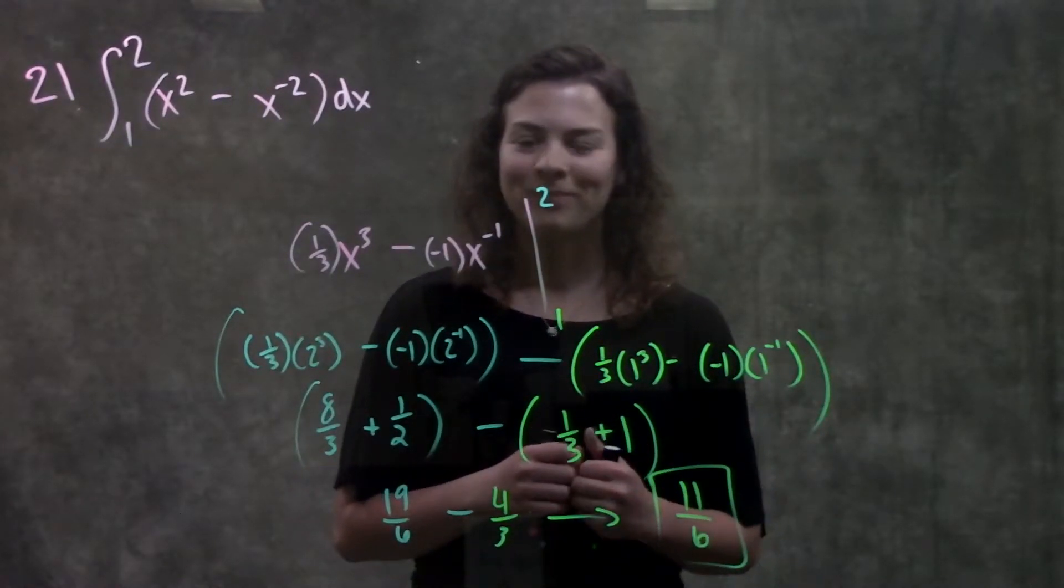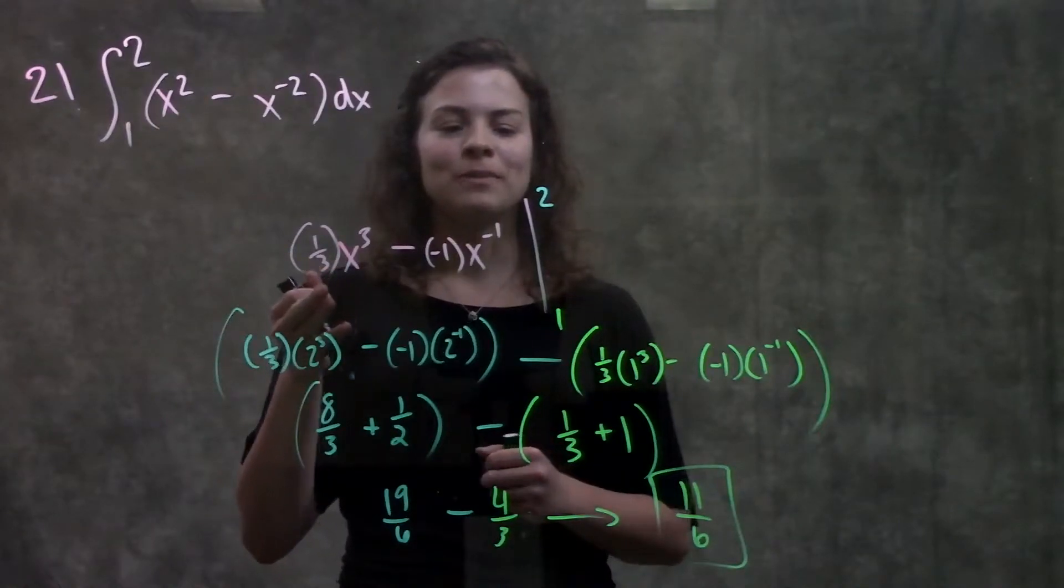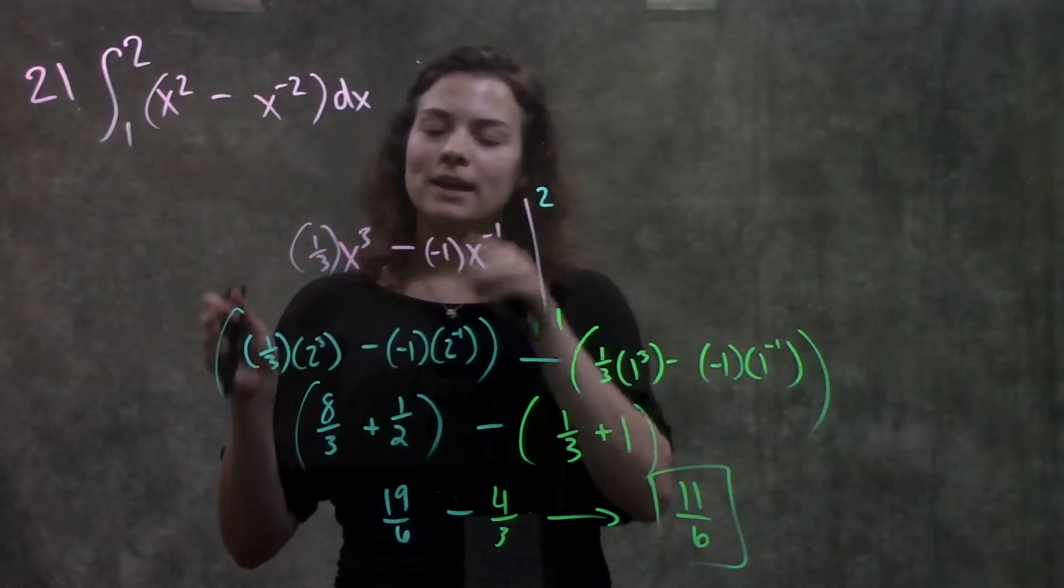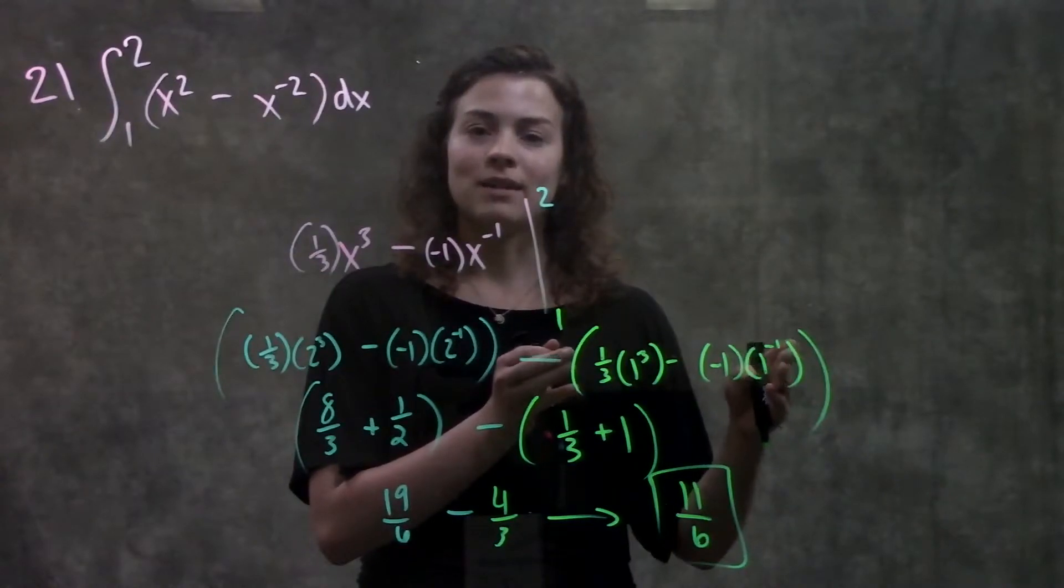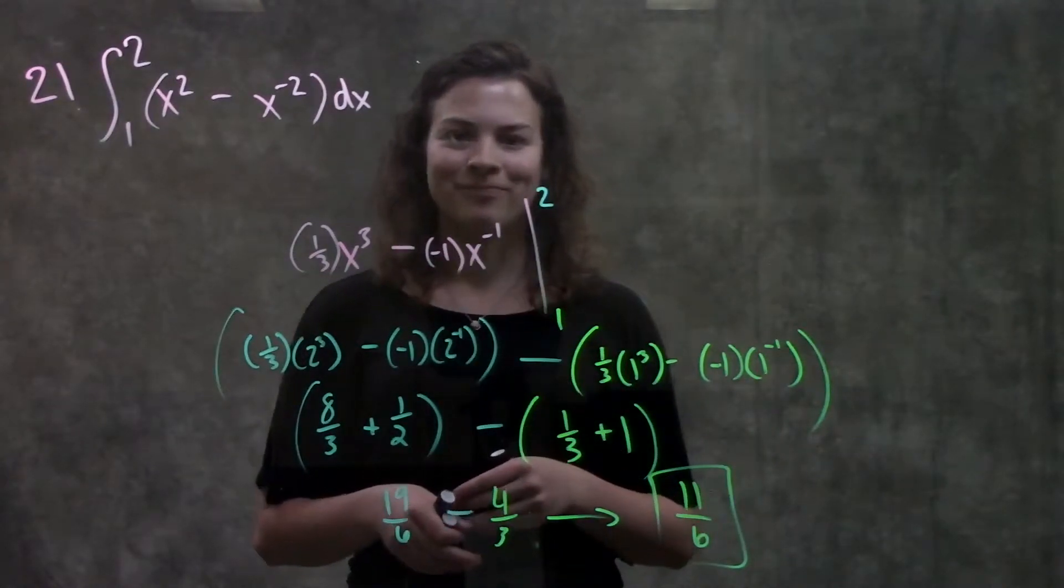And that's really it for this problem. So we started by taking the integral from 1 to 2, then we just plug in our top number, and then minus the entire thing when we plug in our bottom number. And that's it.